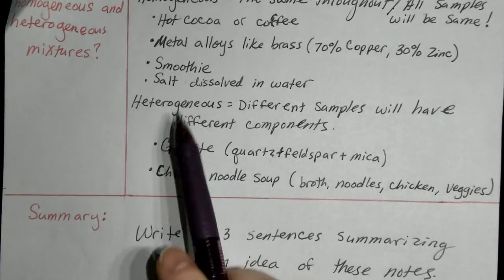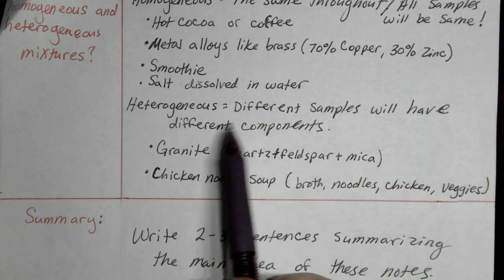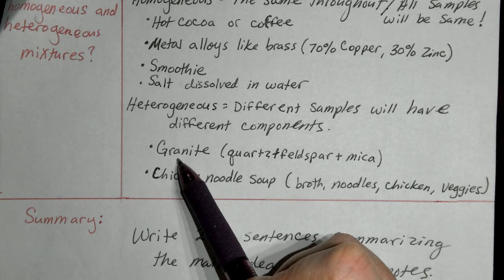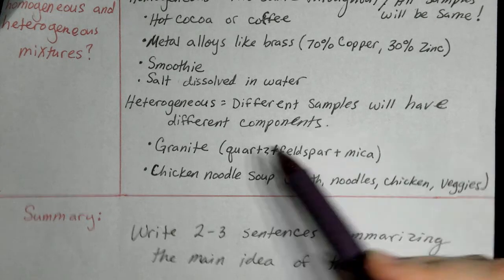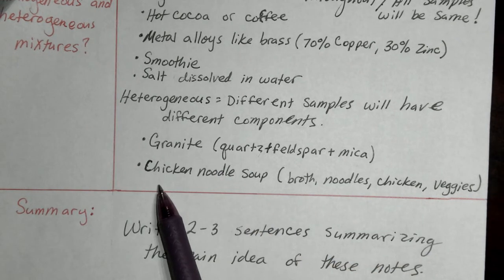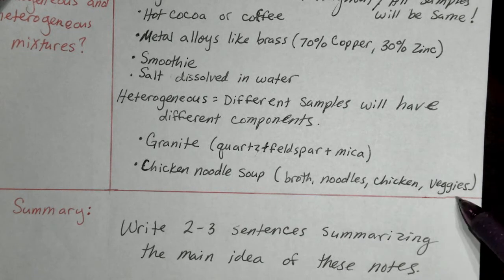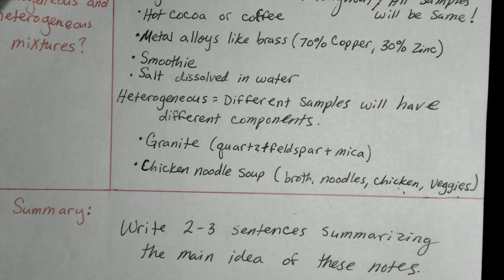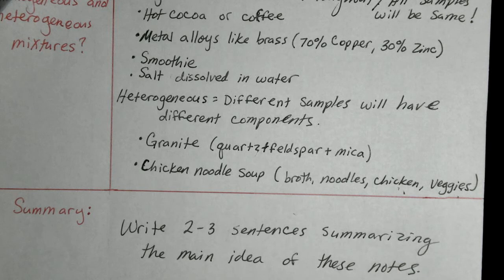Heterogeneous mixtures: different samples will have different components. Granite — the type of rock all over our driveways — has all sorts of different colored minerals in it; you can see at least two or three different types of rocks in there. Chicken noodle soup has broth (a liquid), plus noodles, chicken, and veggies (three solids) — the noodles are different from the chicken, and both are different from the vegetables. You can see three or four different things, and it's completely different throughout — that is heterogeneous.